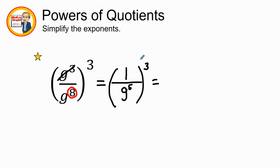So when I go ahead and distribute, this is going to be 1 to the 1st power, and I'll distribute the 3 by multiplication. So 3 times 5. 1 to the 3rd power is 1. And then 5 times 3 is 15. So I have 1 over g to the 15th power. Awesome. That seemed pretty easy.